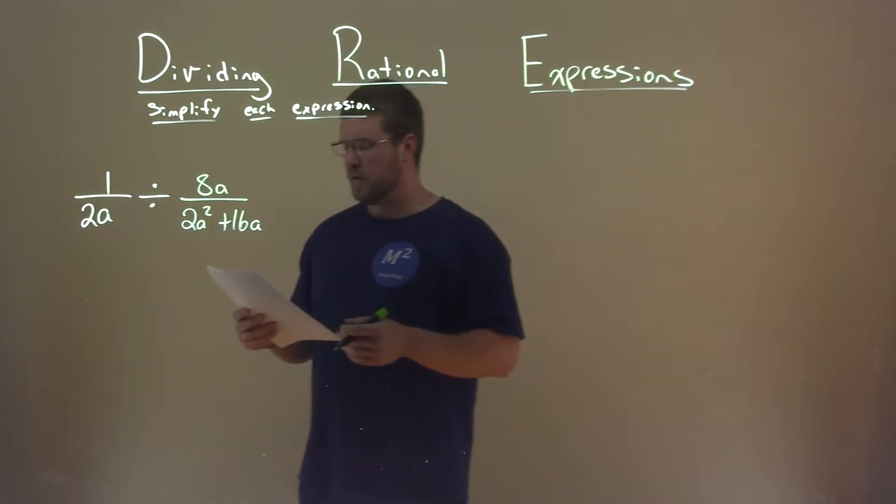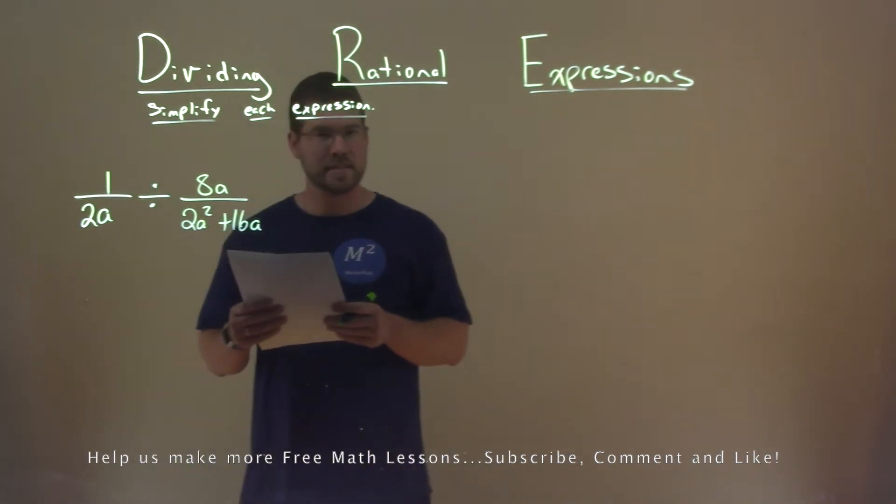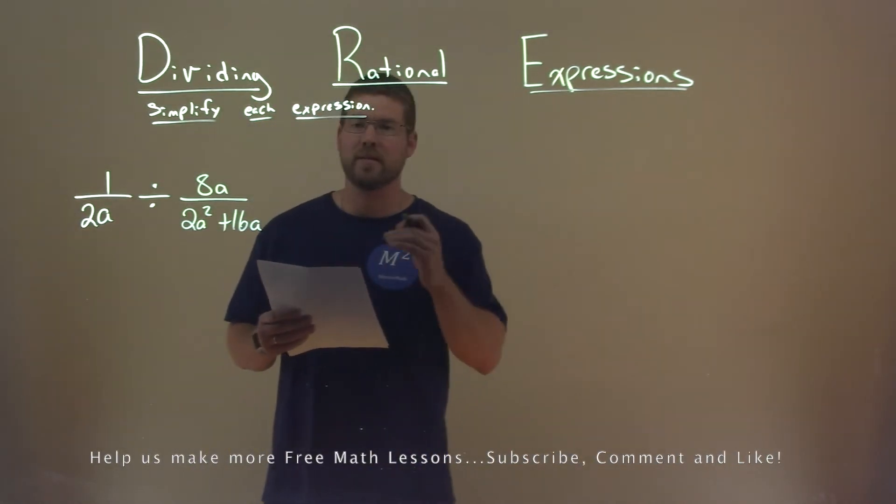We're given this problem right here: 1 divided by 2a, divided by 8a over 2a squared plus 16a, and we want to simplify this expression.